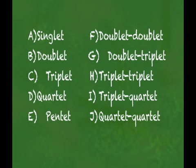Earlier when we counted our hydrogens, we counted 4. Therefore, we can automatically eliminate from our given choices the singlet, doublet, triplet, triplet quartet, and quartet quartet.